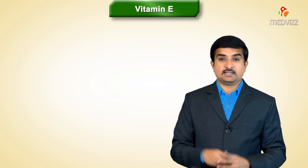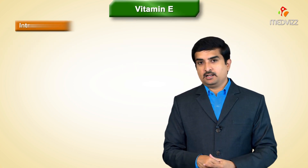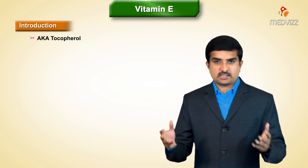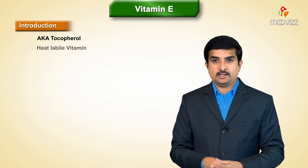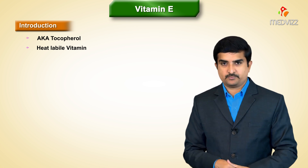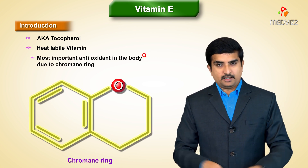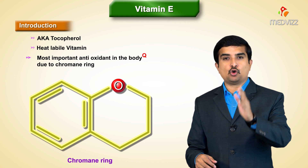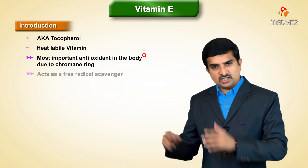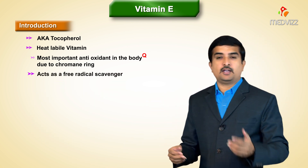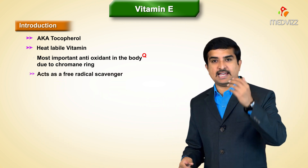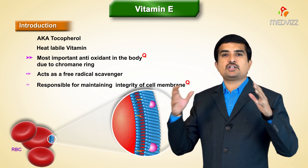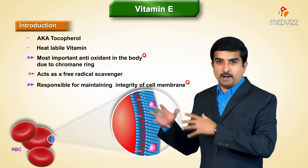The next vitamin is Vitamin E, also called tocopherol. This vitamin E or tocopherol is a heat-labile vitamin and is the most important antioxidant in the body due to its chromanol ring. Vitamin E acts as a free radical scavenger and is responsible for maintaining the integrity of the cell membrane.